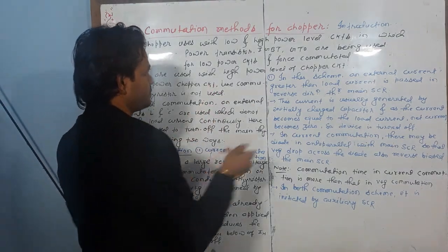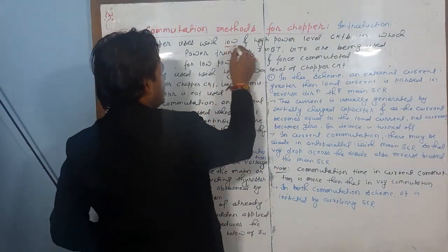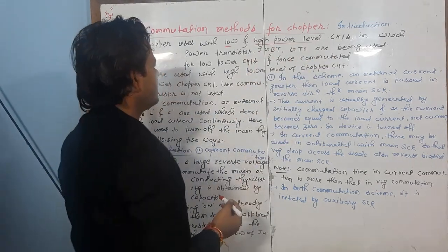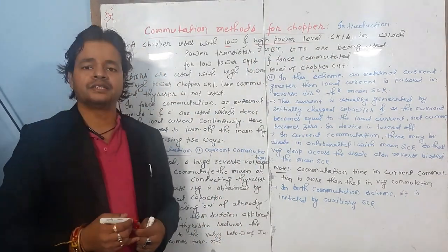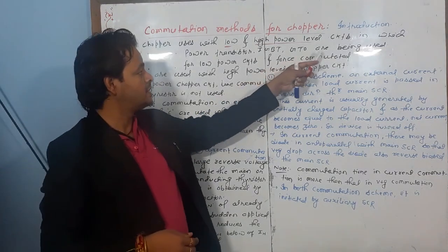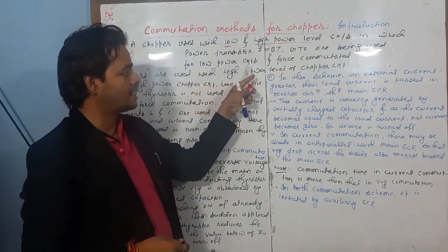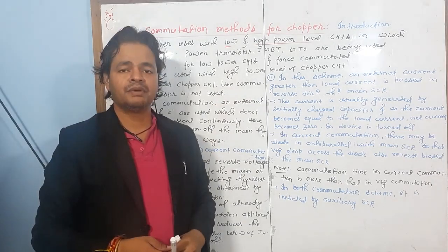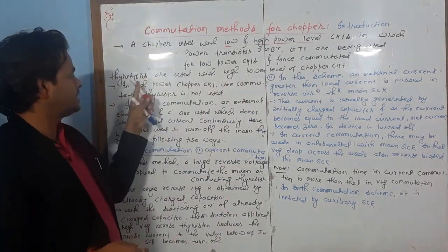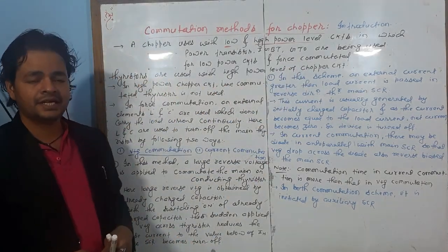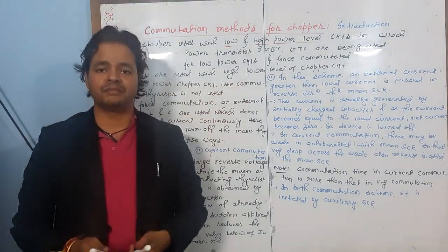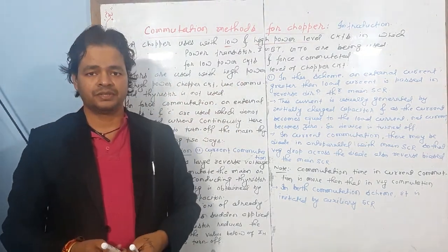A chopper uses two types of circuits: low power level and high power level circuits. In the high power level circuit, power transistors, IGBTs, and GTOs are used.